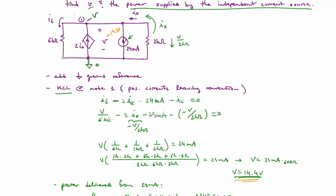Lastly, we were asked to find the power supplied by the independent current source, this 24 milliamp source right here. And we find that there is 24 milliamps supplied, and there's a voltage across it of this polarity that's equal to 14.4 volts. And so the power supplied by it,